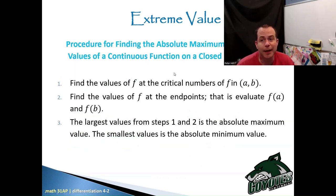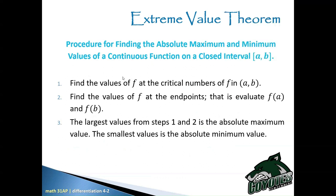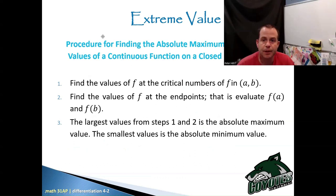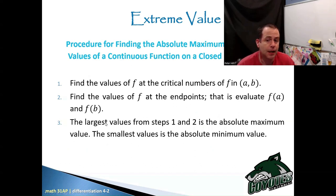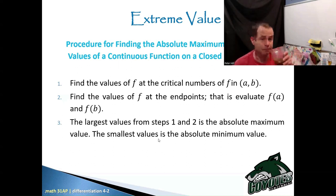Procedure for finding the absolute maximum and minimum values of a continuous function on a closed interval A to B: find the values of f at the critical numbers of f in the open interval A to B; then find f at the endpoints, evaluating f of A and f of B; and the largest values from steps 1 and 2 is the absolute maximum, and the smallest value is the absolute minimum.